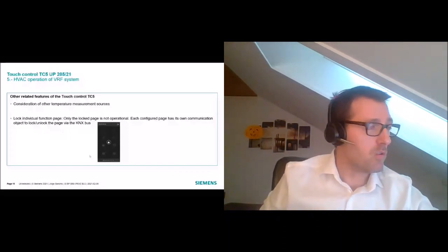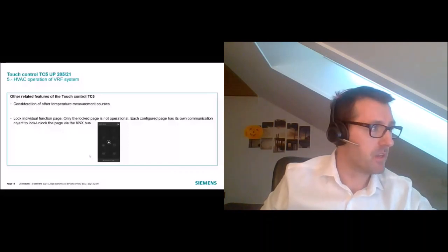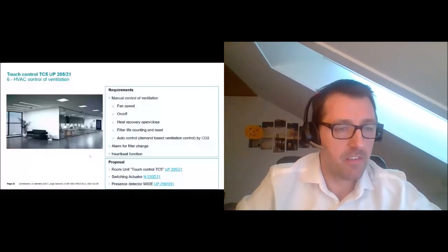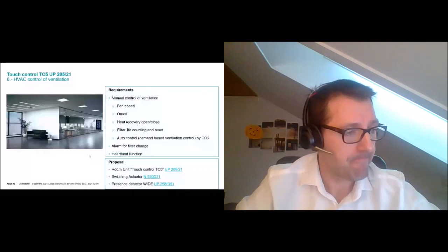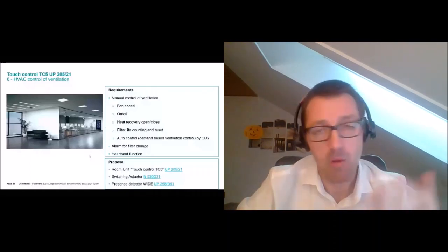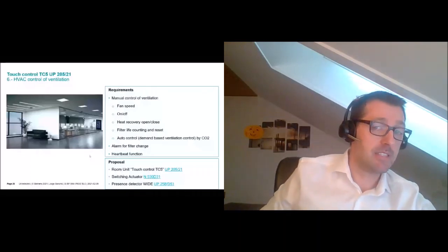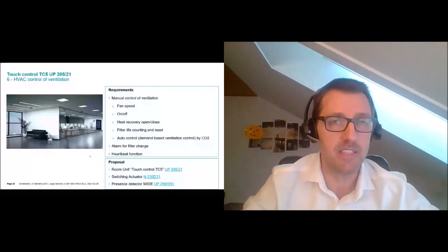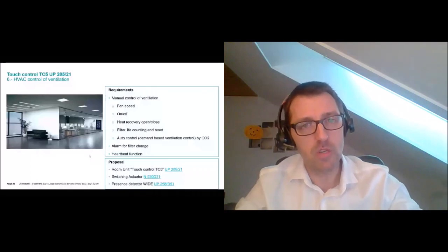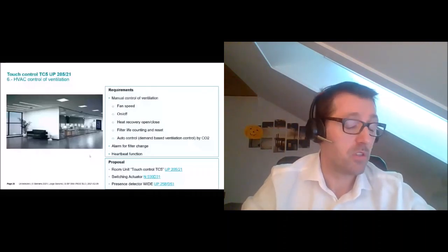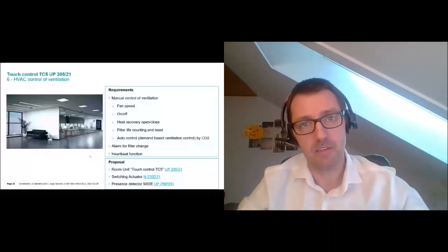Use Case 4: ventilation control. The requirements are fan on/off, heat recovery, filter life counting, and control based on CO2 level. The customer also wants an alarm to know when to change the filter, and a heartbeat function. Proposal: TC5, switching actuators, and a presence detector White. For ventilation, as with VRF, we have a dedicated page — when you select ventilation in the TC5 ETS settings, it automatically generates a page with the CO2 value display, modes, heat recovery switch, and all the controls you need.